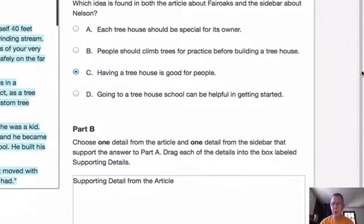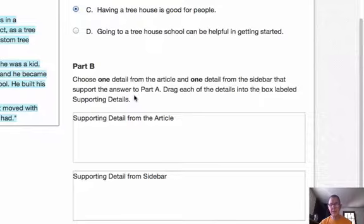Now let's go on to the next question. It says choose one detail from the article and one detail from the sidebar, which is the second article, that support the answer to Part A. Drag each of the details into the box labeled supporting details.